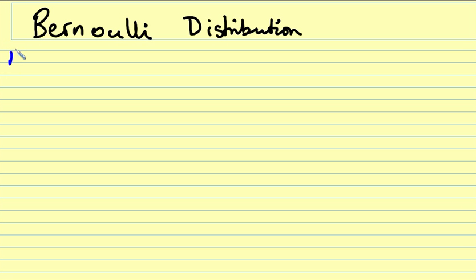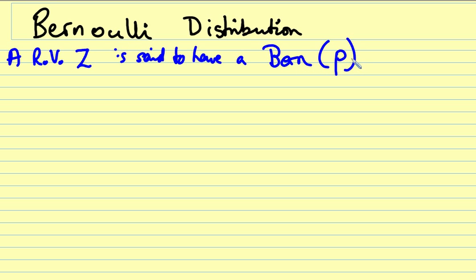We're going to say that a random variable called Z is said to have a Bernoulli distribution with parameter p if this random variable Z takes on one of two values.